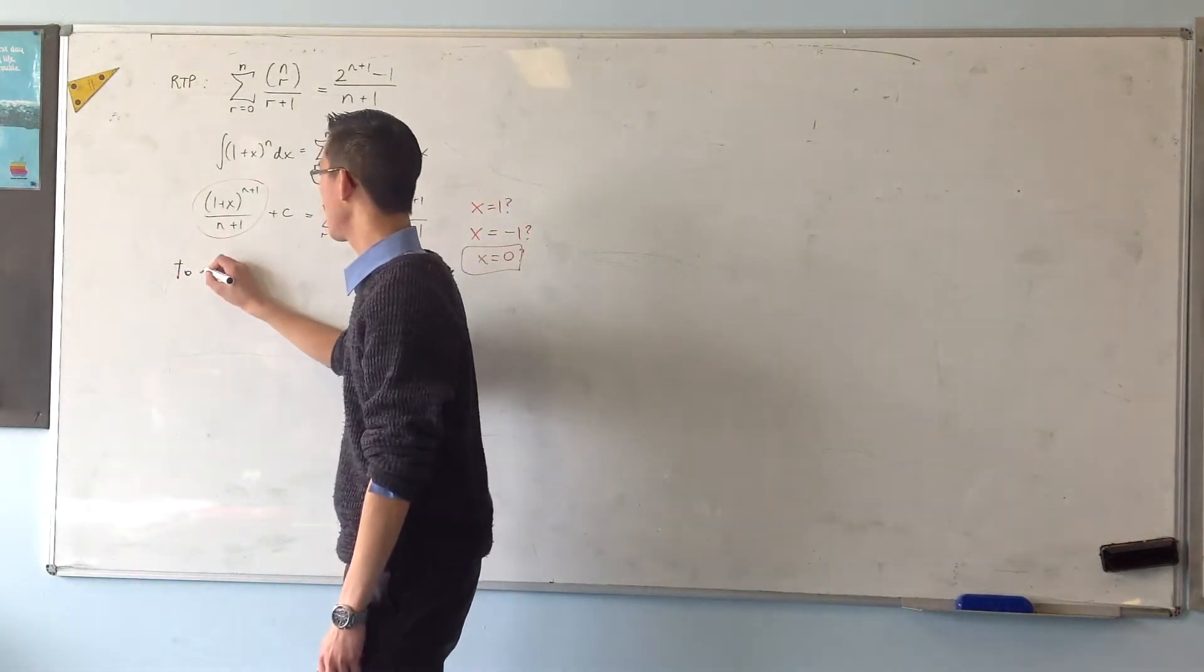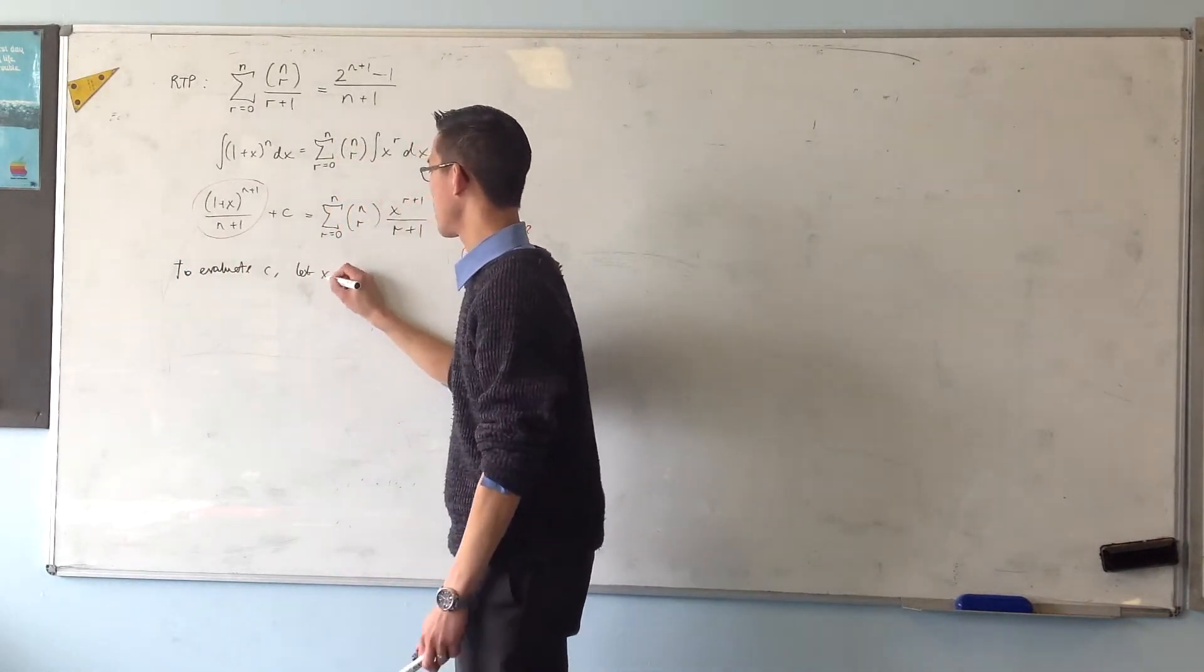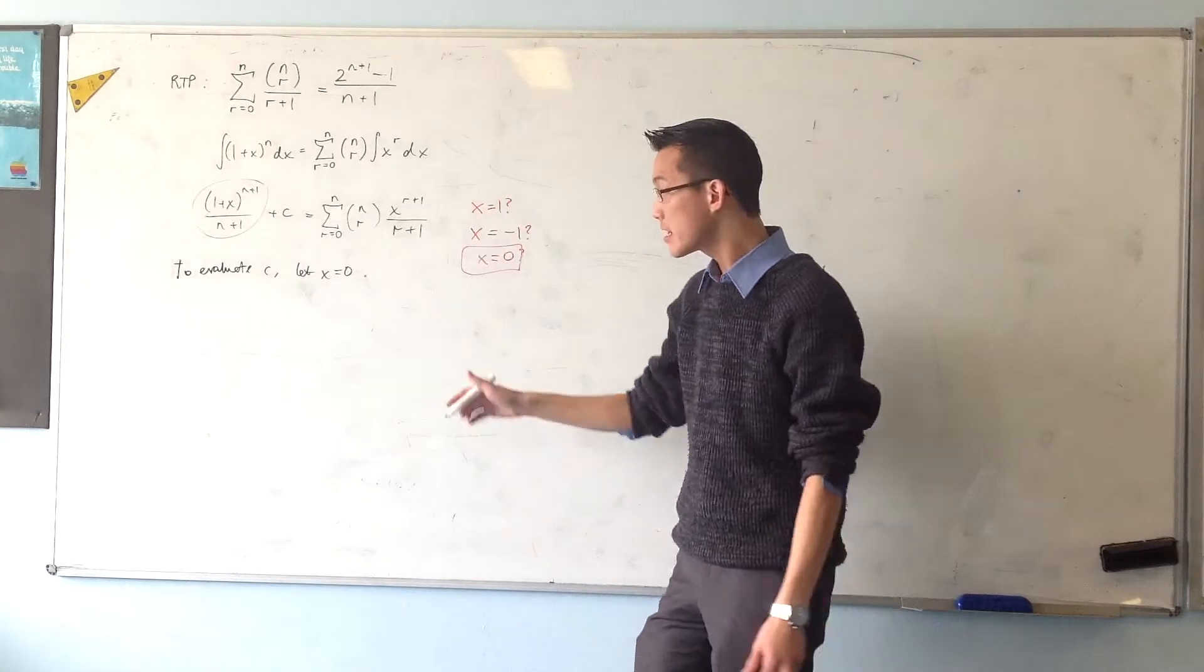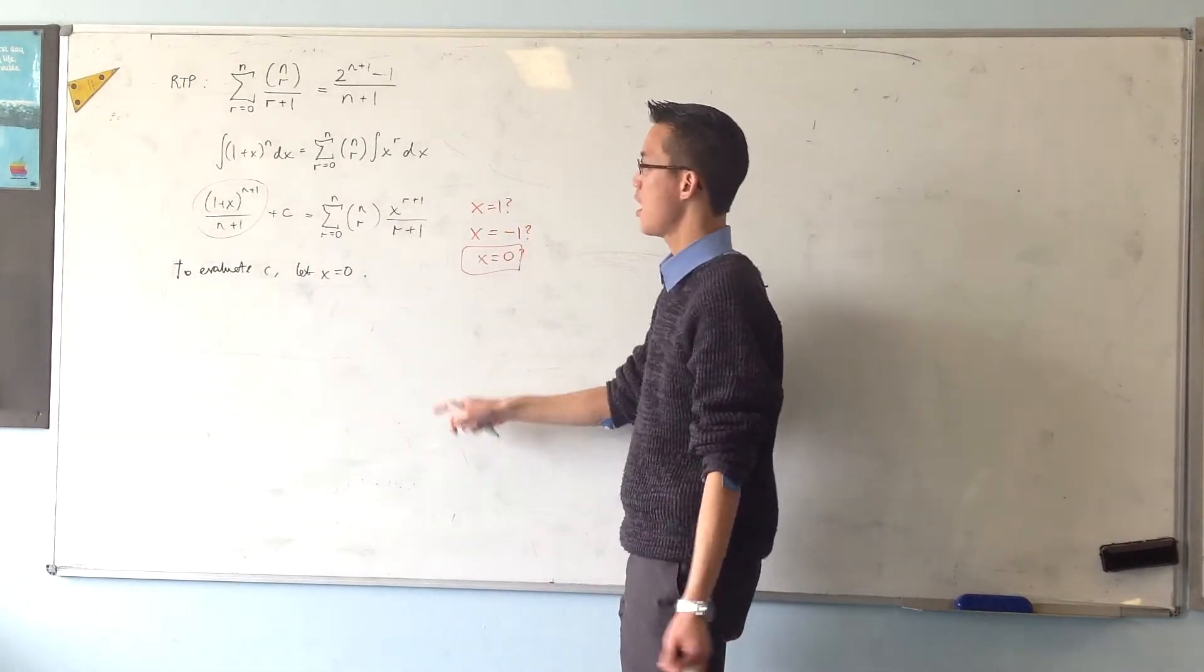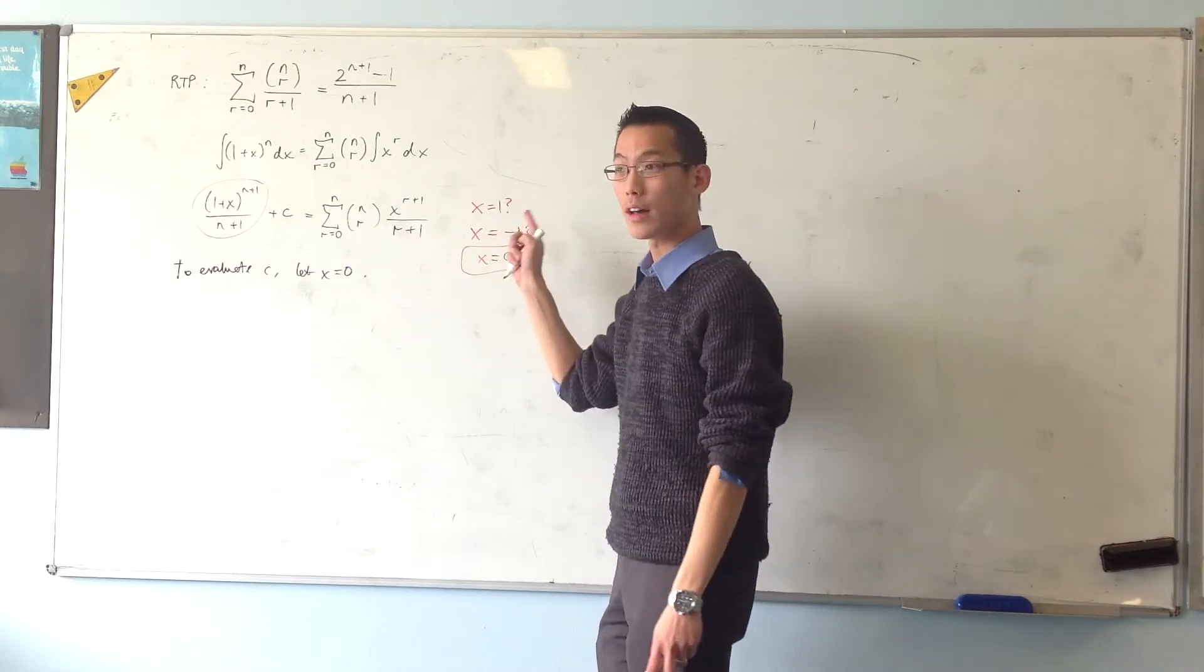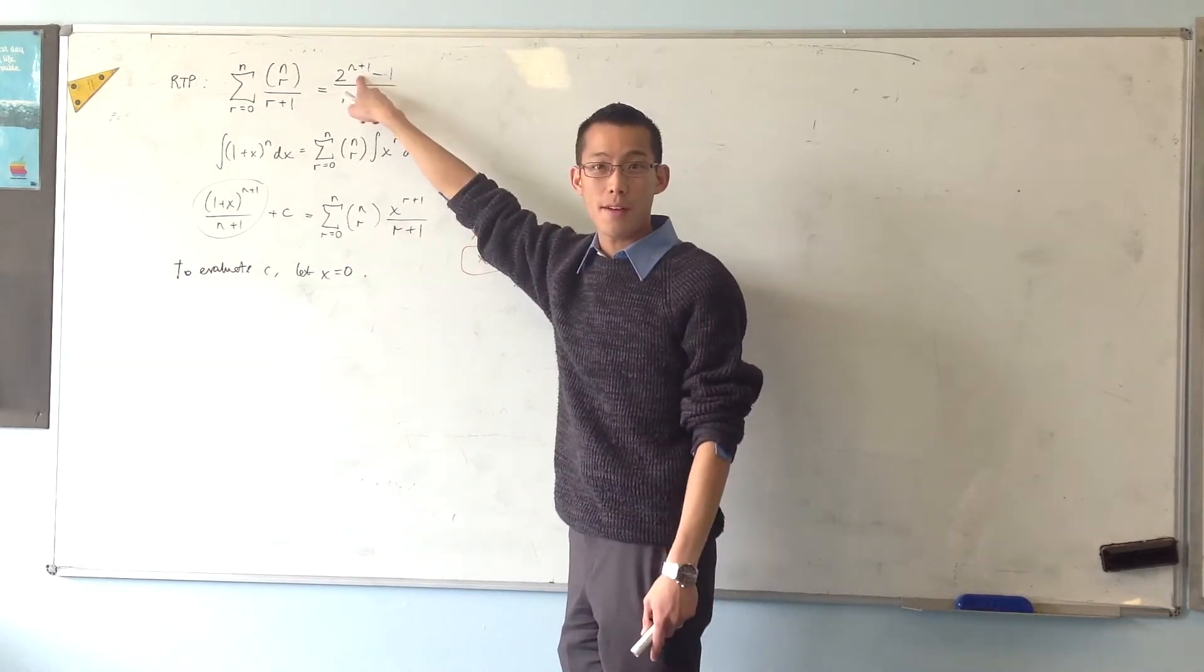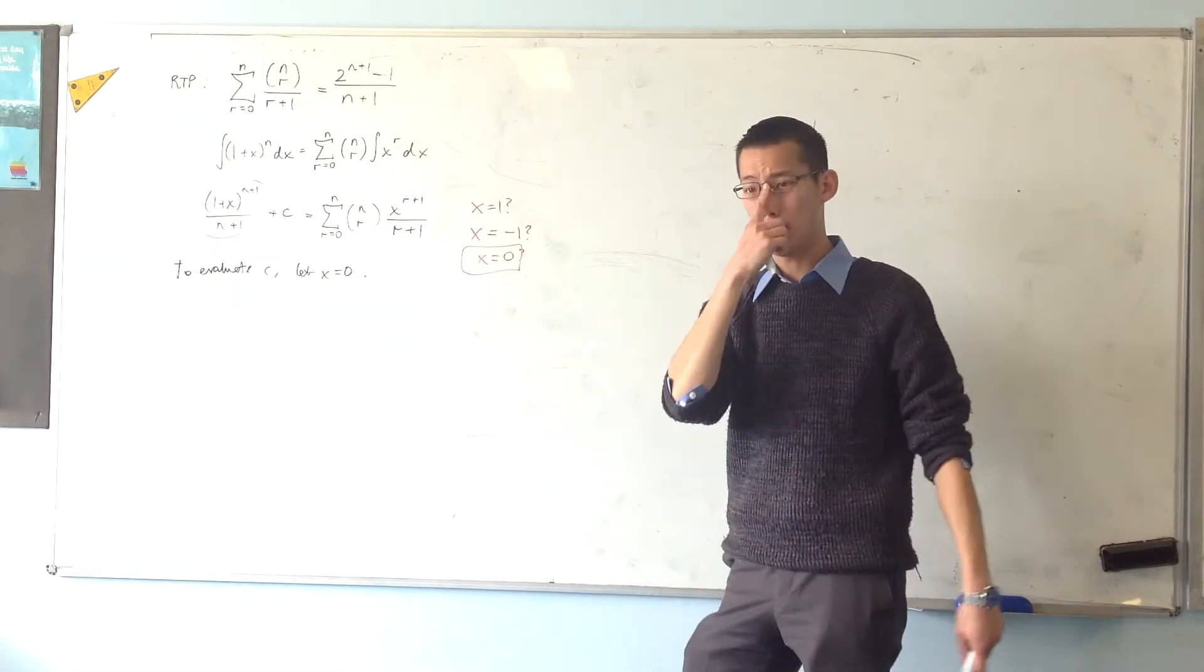So I'm going to say, to evaluate c, let x equal 0. Now that's the only purpose I have, to evaluate c. Once I've gotten a value for c, I'll come back to this line, and just like we did before, I'll put in x equals 1, because that gives me the actual identity that I'm after. But just while I'm trying to work out what this constant is, I'm going to go with this value.